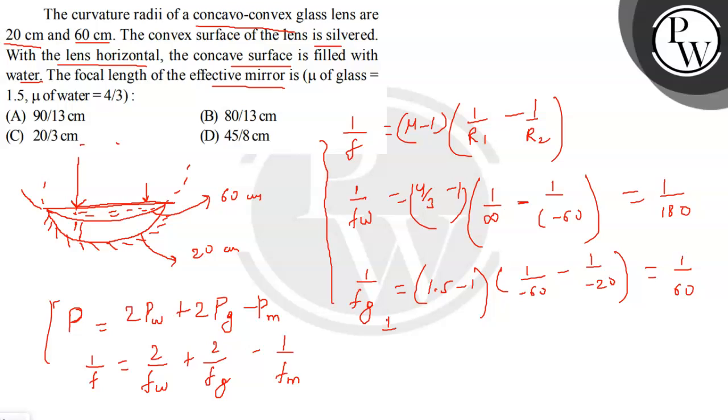for mirror, focal length is equal to the radius of curvature by 2 and the radius of curvature is 20 centimeter by 2 it will be negative, so it will be 10 centimeter.